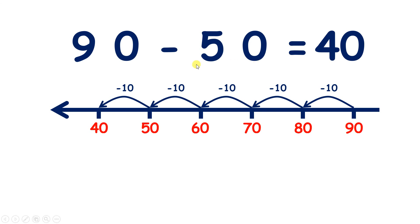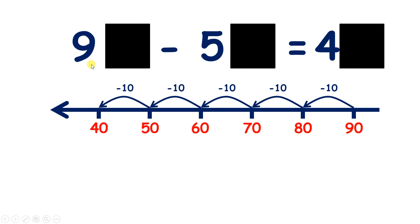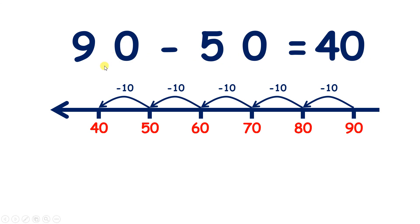And how could we calculate that mentally without a number line? Well, if we know that 9 minus 5 is 4, we can be sure that 9 tens minus 5 tens is 4 tens, or 40.